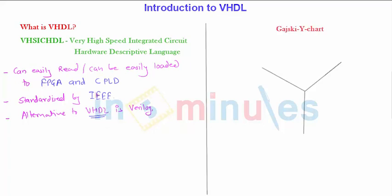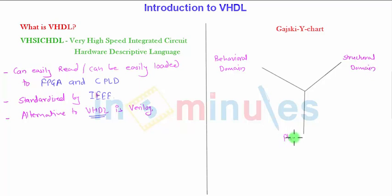What we have here is Gajski's Y-chart. Gajski is a scientist who discovered this, and it looks like a Y. It has three domains, so you can also call them the domains of VHDL. The very first domain is the behavioral domain, the next one is the structural domain, and the last one is the physical domain.